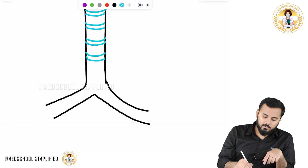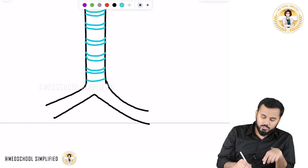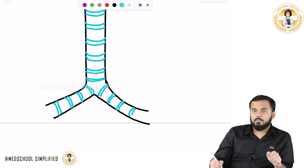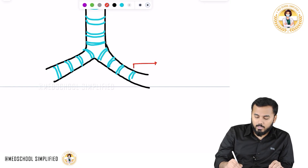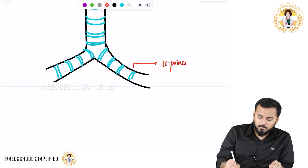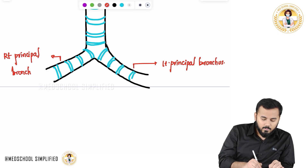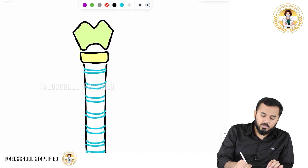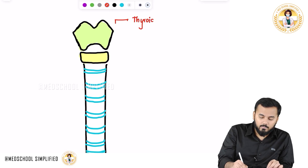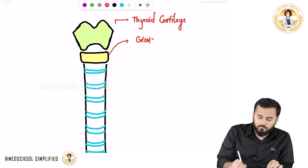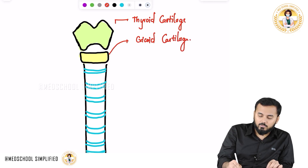How many rings are there? There are around 15 C-shaped rings. Here you have the left principal bronchus and the right principal bronchus. This one is the thyroid cartilage and this is the cricoid cartilage.